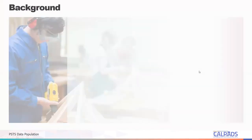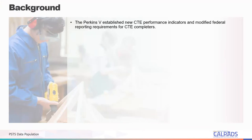The PSTS data collection through CALPADS came into fruition when the Strengthening Career and Technical Education for the 21st Century Act, or Perkins V, established new CTE performance indicators and modified federal reporting requirements for career technical education, or CTE completers. The data was formally collected through the E2 reporting.